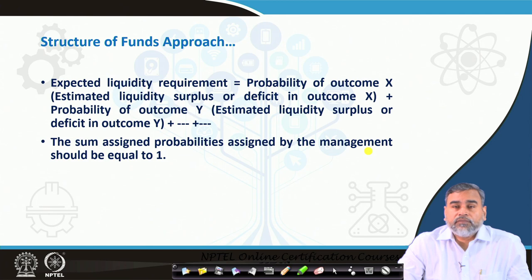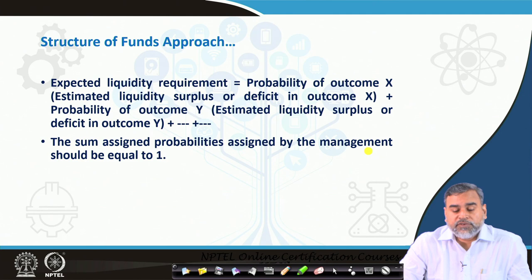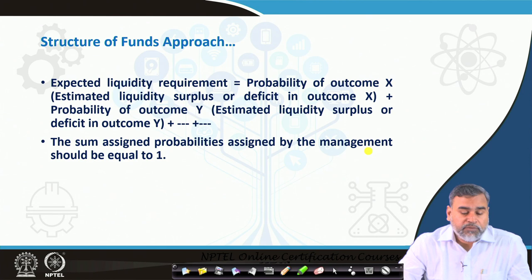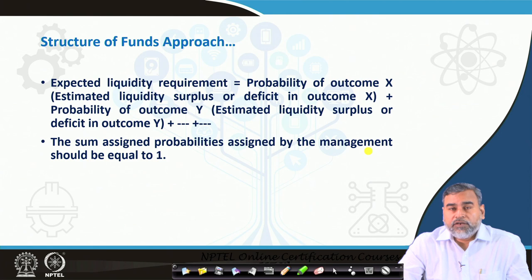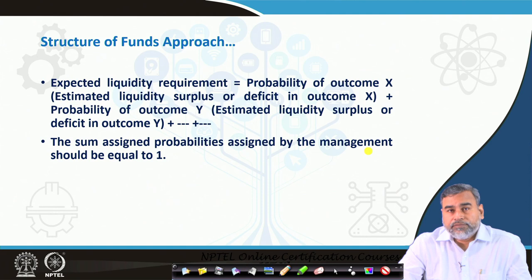The expected liquidity requirement of a commercial bank can be calculated as: the probability of outcome X × the estimated liquidity surplus or deficit in outcome X, plus the probability of outcome Y × the estimated liquidity surplus or deficit in outcome Y, and so on. The probabilities assigned by management to each possible outcome must sum to 1 — they should not exceed 100 percent.